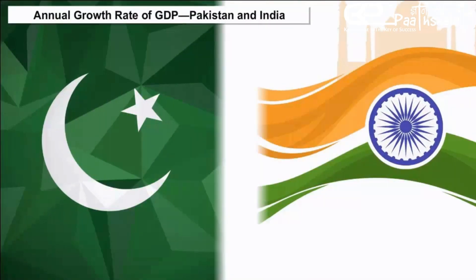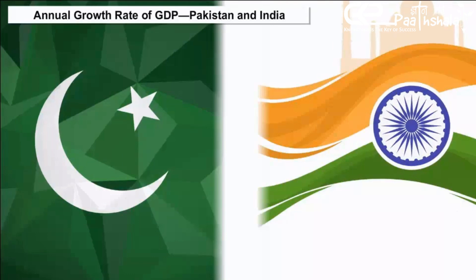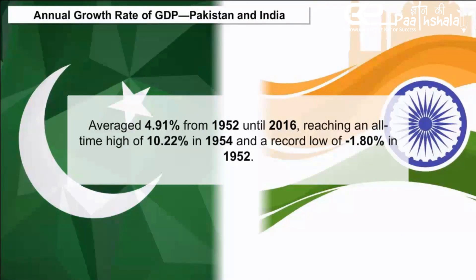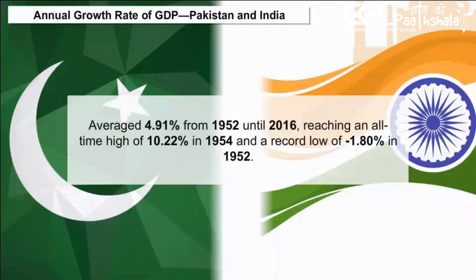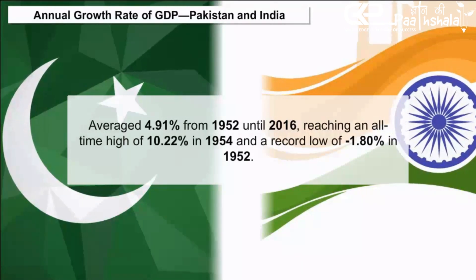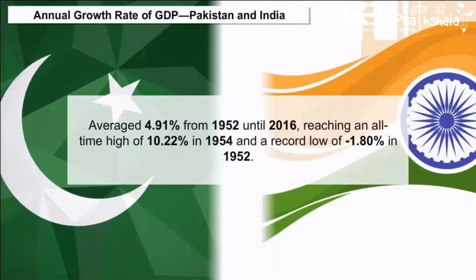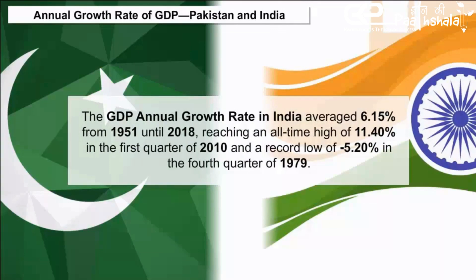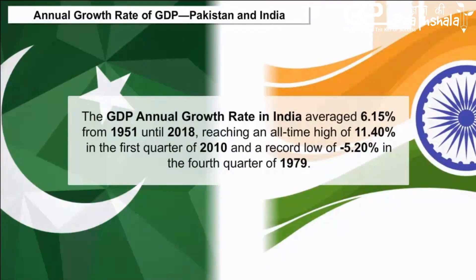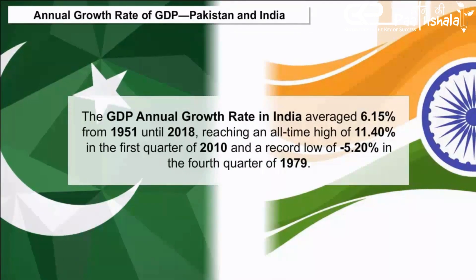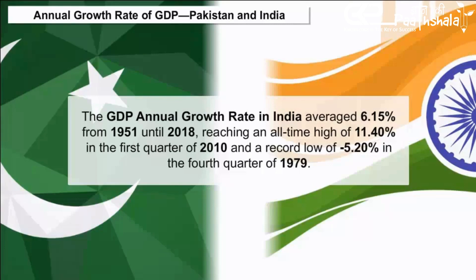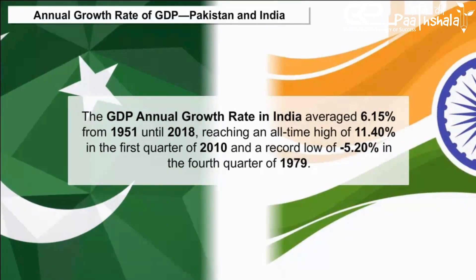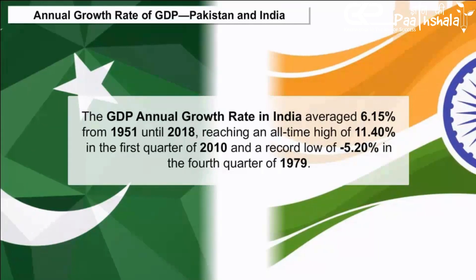GDP growth rate in Pakistan averaged 4.91% from 1952 until 2016, reaching an all-time high of 10.22% in 1954 and a record low of minus 1.80% in 1952. The GDP annual growth rate in India averaged 6.15% from 1951 until 2018, reaching an all-time high of 11.40% in the first quarter of 2010 and a record low of minus 5.20% in the fourth quarter of 1979.